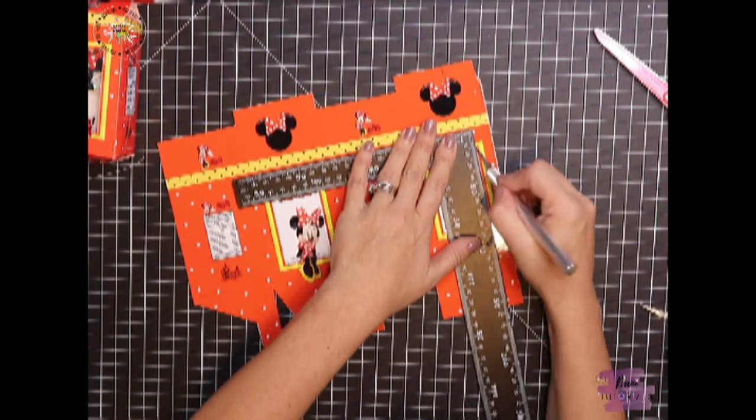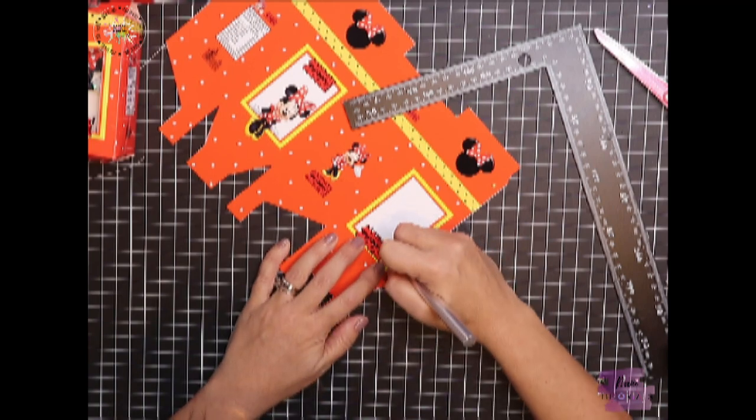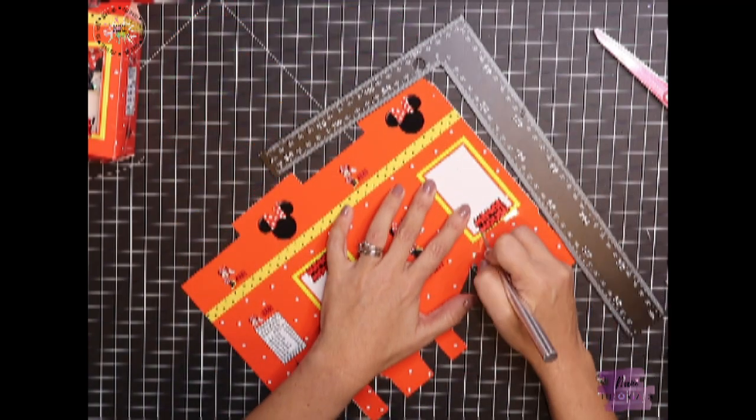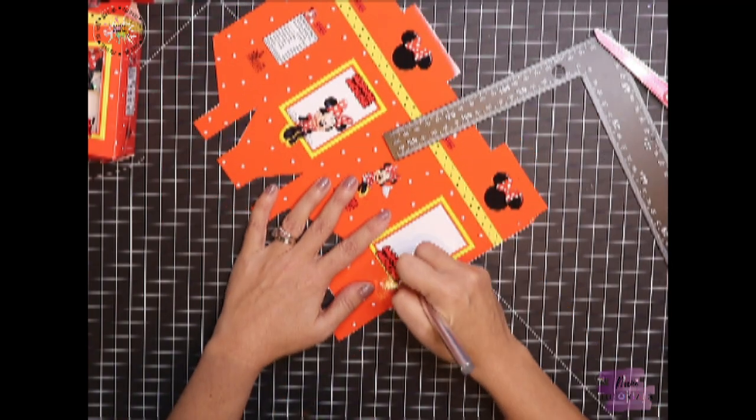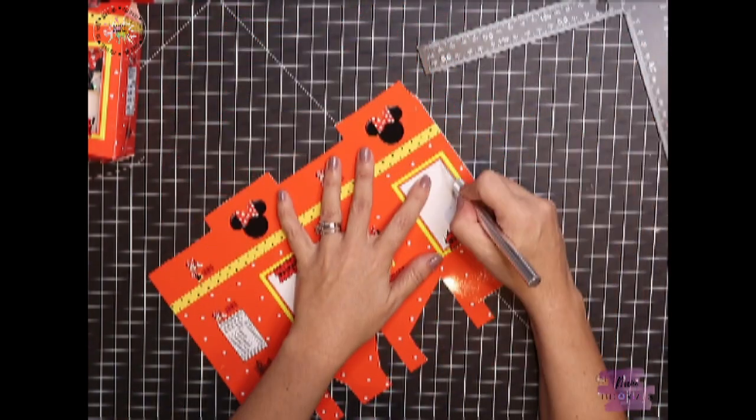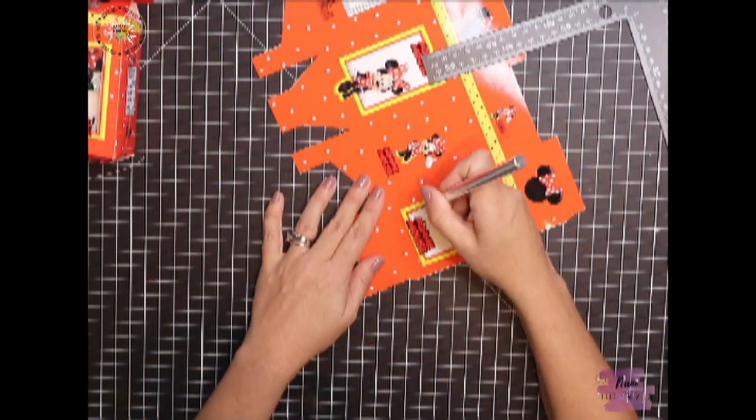If you want to make a centerpiece or something bigger, just print on bigger paper. As you can see, I'm just cutting around, and with this exacto knife I'm cutting that little window where I want to make the shadow box.